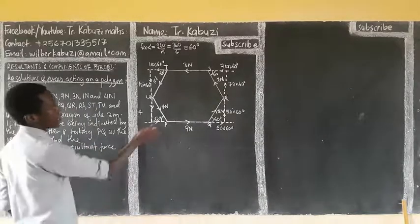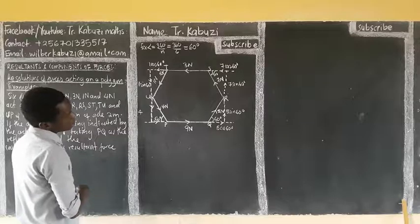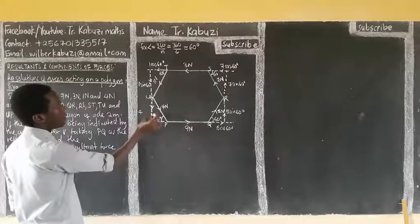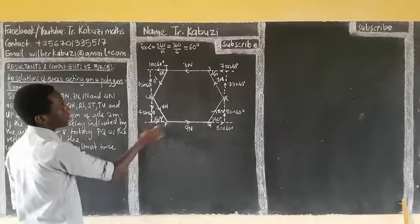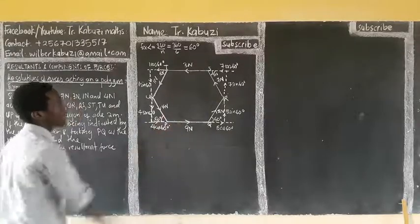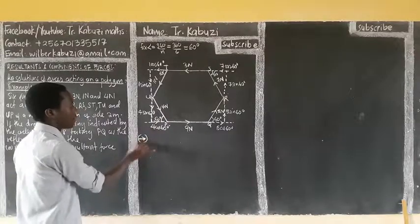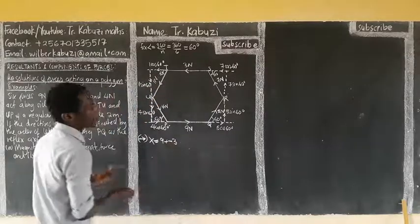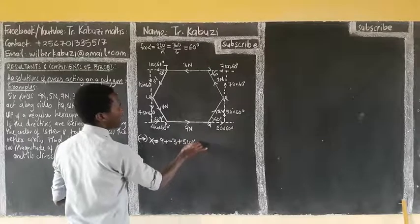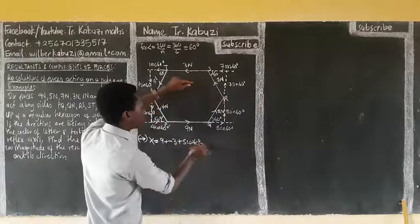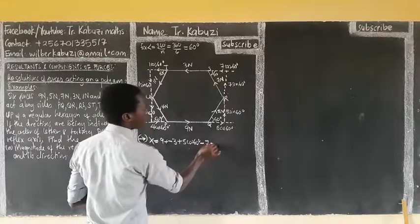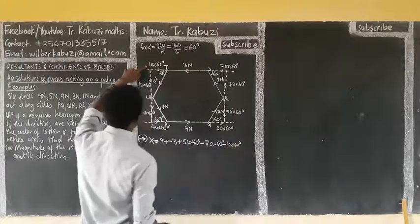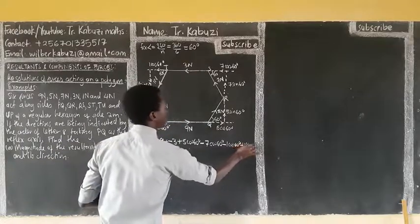Now we have finished resolving. Let us give the x-components. For the x-direction, we have 9, then plus negative 3 which is opposing. Going in the positive direction, we have plus 5 cos 60 degrees. Then this one is opposing: minus 7 cos 60 degrees, as it sits on the opposing side. Then minus 1 cos 60 degrees — this one is also opposing. Then plus 4 cos 60 degrees going in the positive direction.